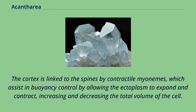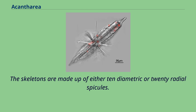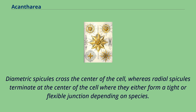The way that the spines are joined at the center of the cell varies and is one of the primary characteristics by which acantharians are classified. The skeletons are made up of either 10 diametric or 20 radial spicules. Diametric spicules cross the center of the cell, whereas radial spicules terminate at the center of the cell where they either form a tight or flexible junction depending on species.